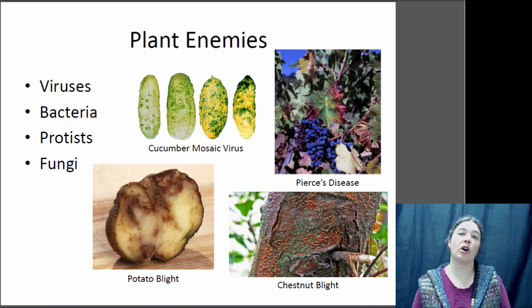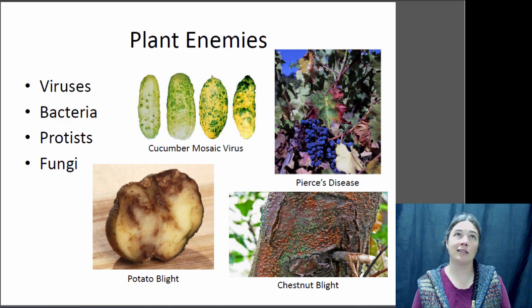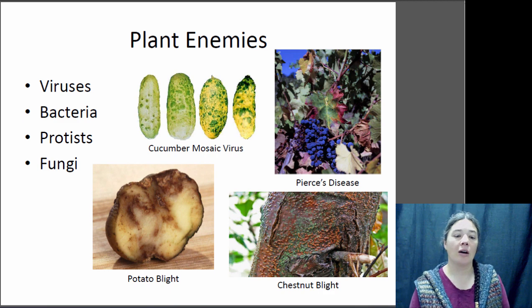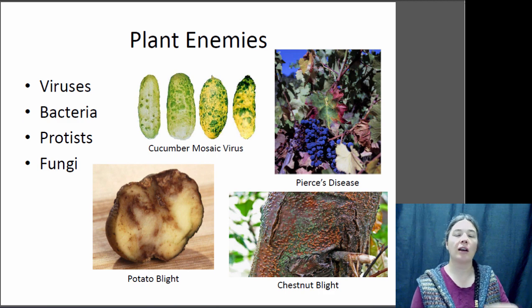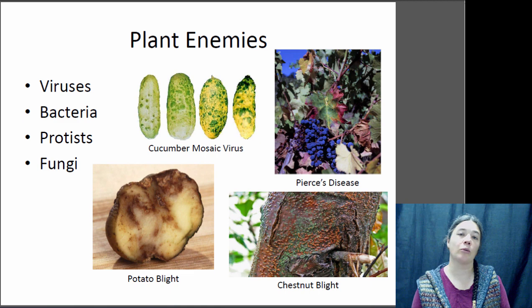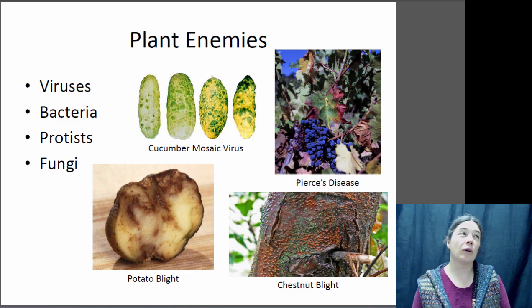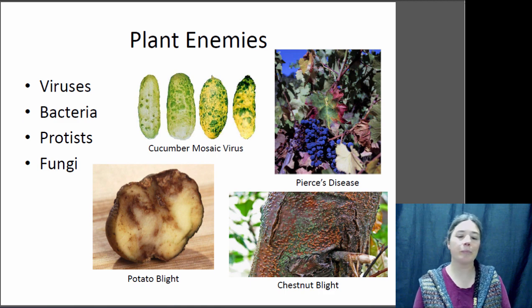Potato blight is actually caused by a protist. Potato blight was the disease that caused the great famine in Ireland, when many Irish people were starving because much of their food source came from potatoes. This protist disease got into the potato crop and there wasn't a crop that people could eat. That was when many Irish people actually immigrated to the U.S. — it was during this great potato famine.